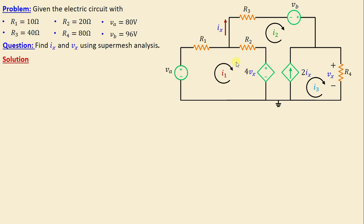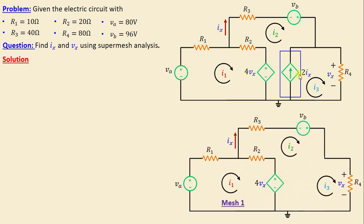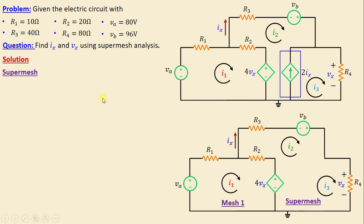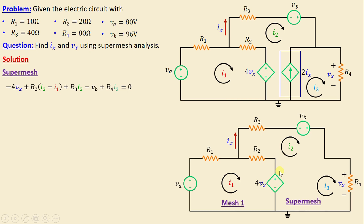After assigning the mesh currents, we need to remove the branch containing the current-controlled current source 2ix. Then we obtain our super mesh by applying Kirchhoff's voltage law.